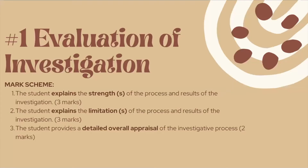Starting off with the evaluation of investigation, if we look at the mark scheme, it says that the student should be able to explain the strengths of the process and results of the investigation, which gives you three marks. You should also be able to explain the limitations of the process and results, and provide a detailed overall appraisal of the investigative process. The strengths have three marks, the limitations have three marks, and the overall appraisal has two marks. One mistake students occasionally make is that they focus too much on the results of the investigation, whereas it's safer and more common to talk about the process itself.